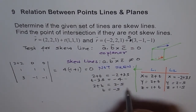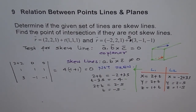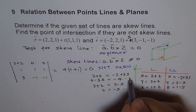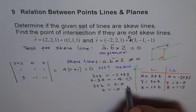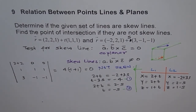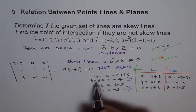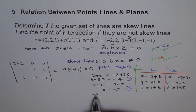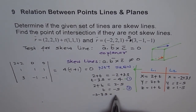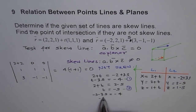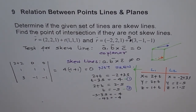We now solve these two equations. Substituting T = −S into equation 1: −S − 3S = −4, so −4S = −4, which means S = 1. Since T = −S, this implies T = −1.